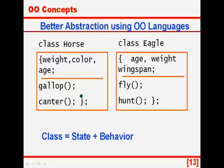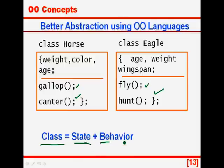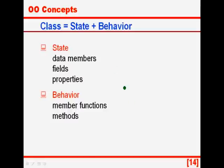In the same way, for the horse class the functions gallop and canter have been encapsulated inside the class, and the functions fly and hunt have been encapsulated into the class eagle. Now the compiler can catch an error of a flying horse or a galloping eagle very easily. Once again: class equals state plus behavior. The state is defined by the data members — the age, weight and wingspan of the eagle. The behavior of the horse is defined by gallop and canter. The behavior of the eagle is defined by fly and hunt.